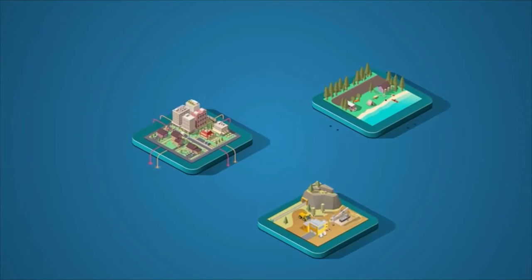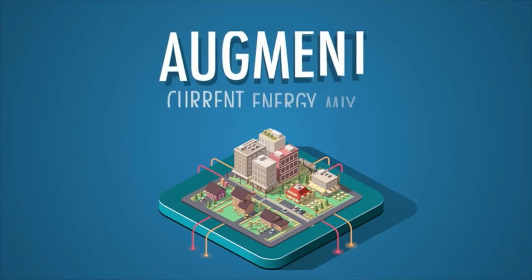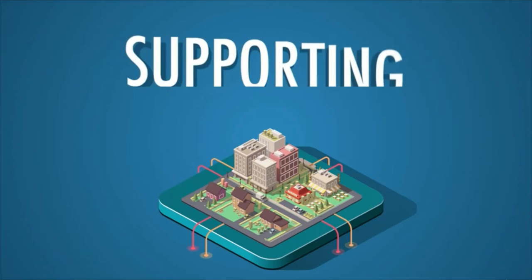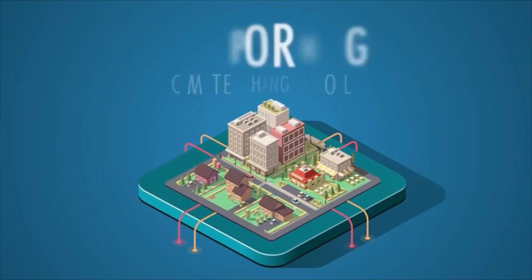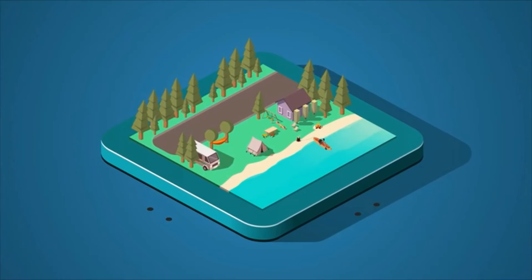SMRs have three potential areas of application in Canada. For communities already connected to the electricity grid, SMRs provide a clean and reliable source of electricity to augment the current energy mix, enabling the development of renewable technologies to support environmental and climate change goals. This is particularly useful in provinces focused on lowering their fossil fuel generation.